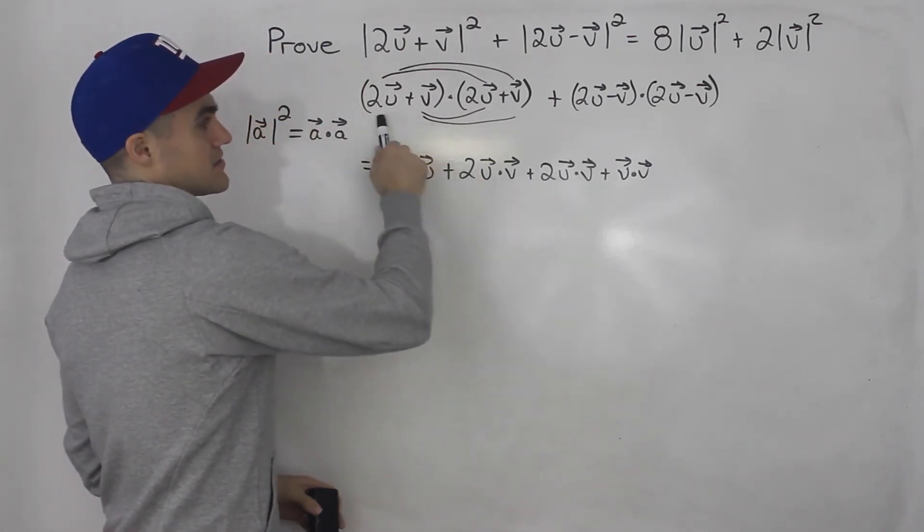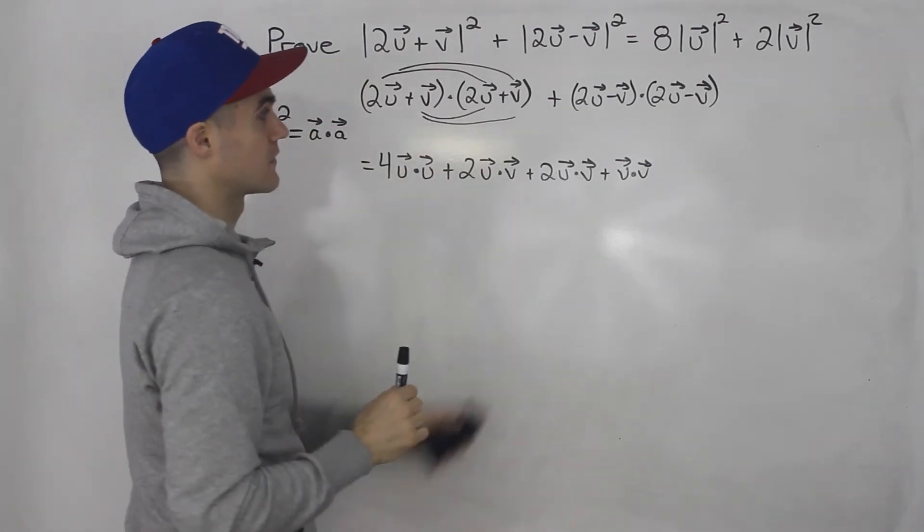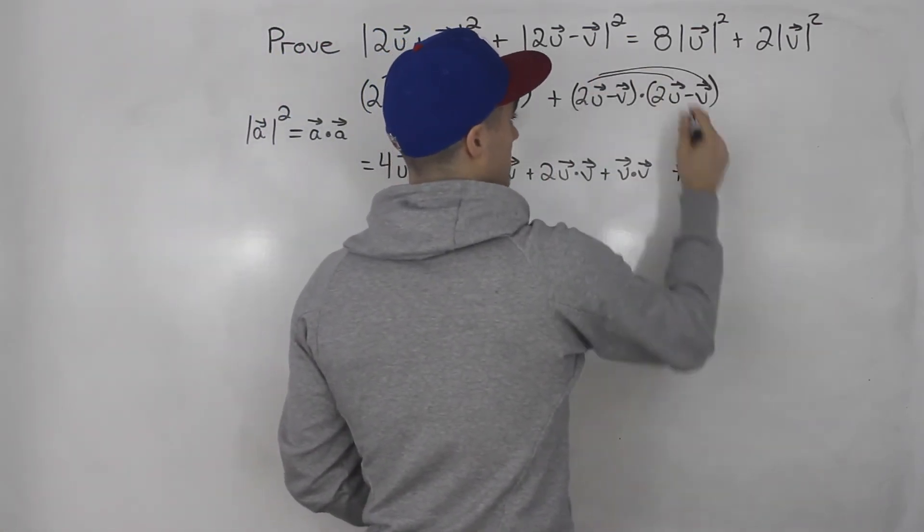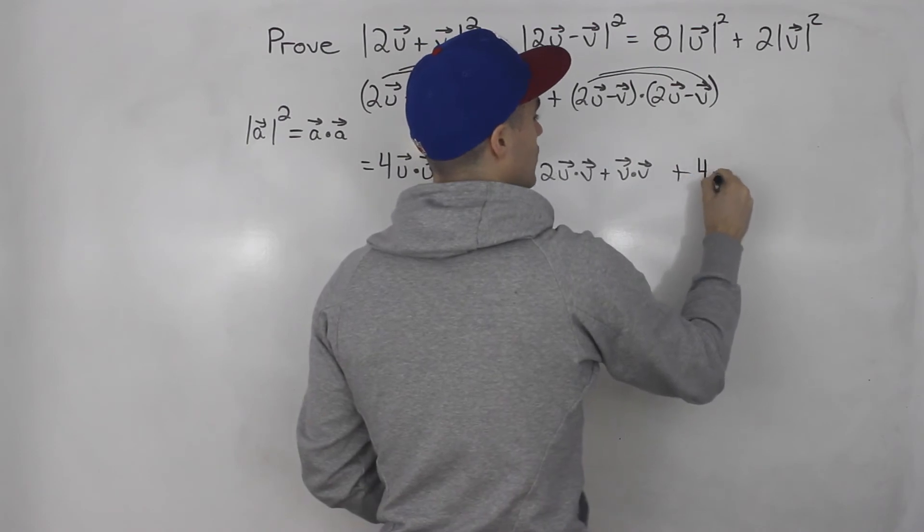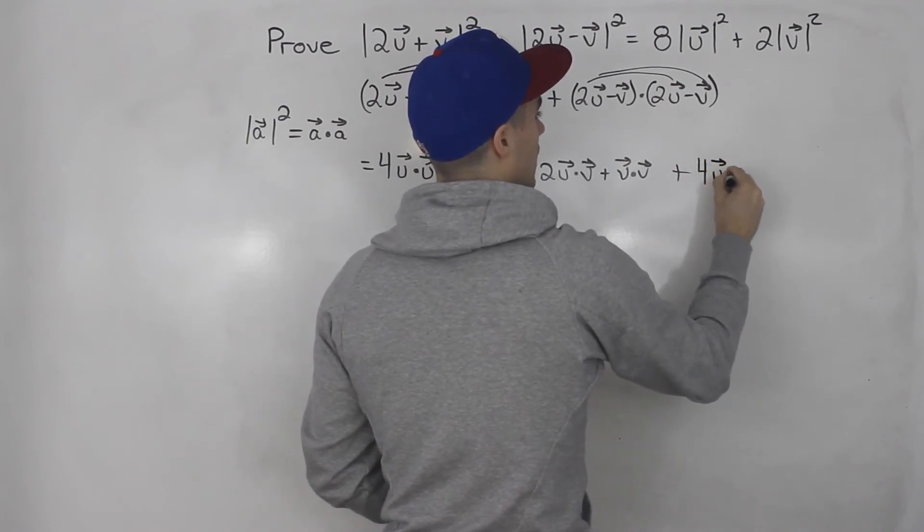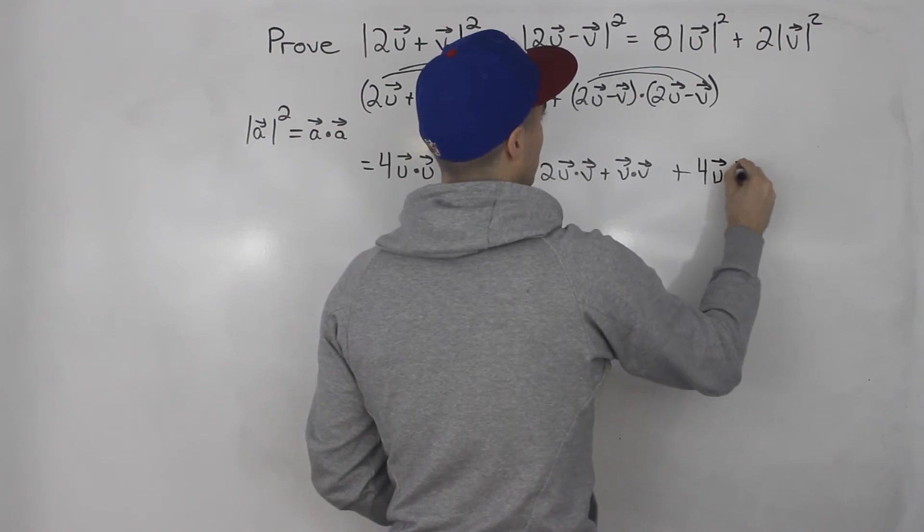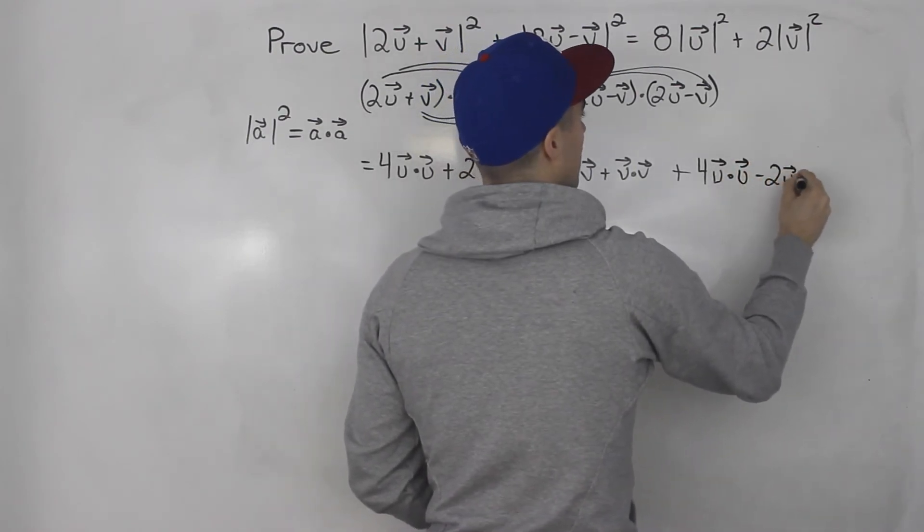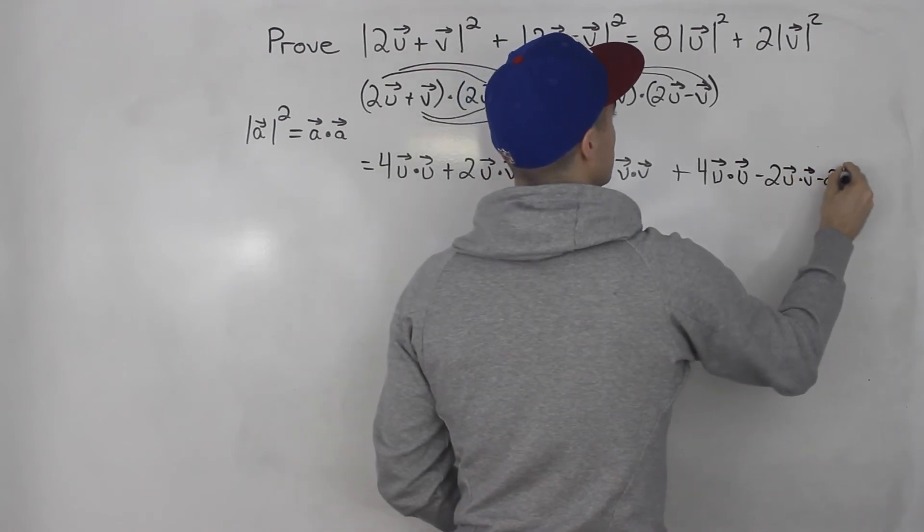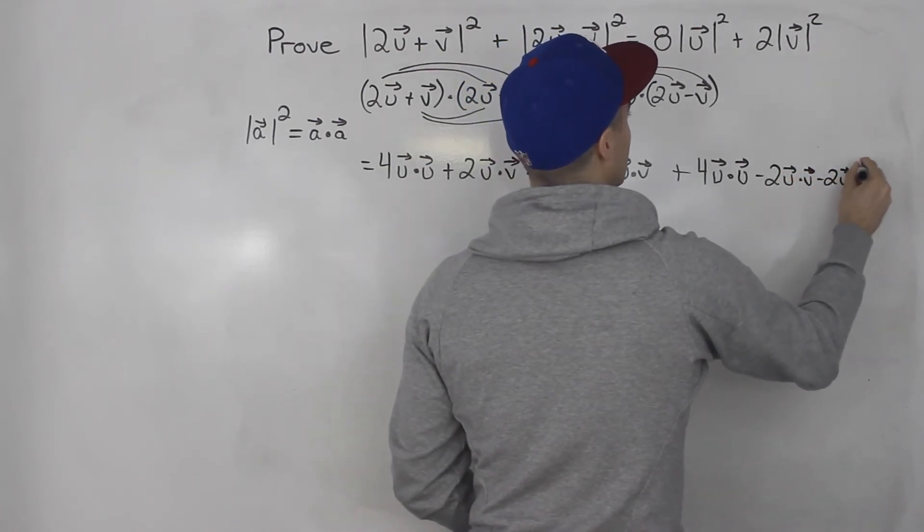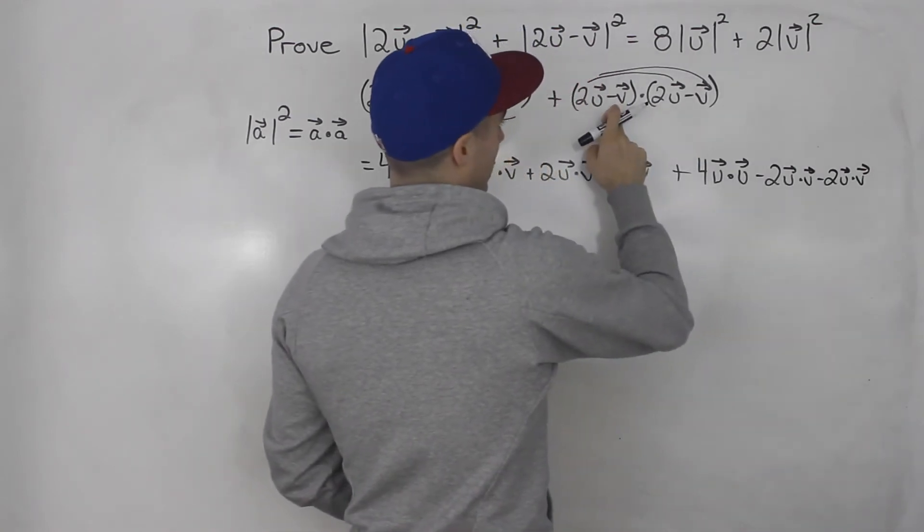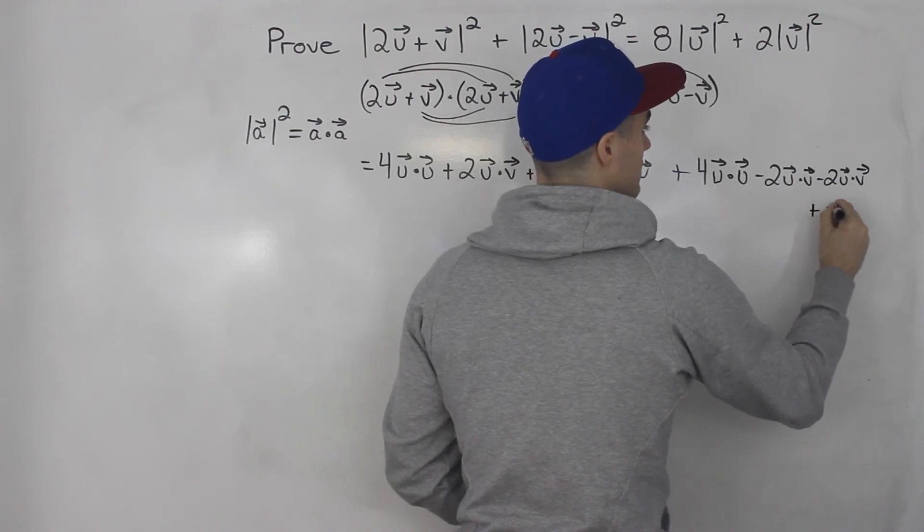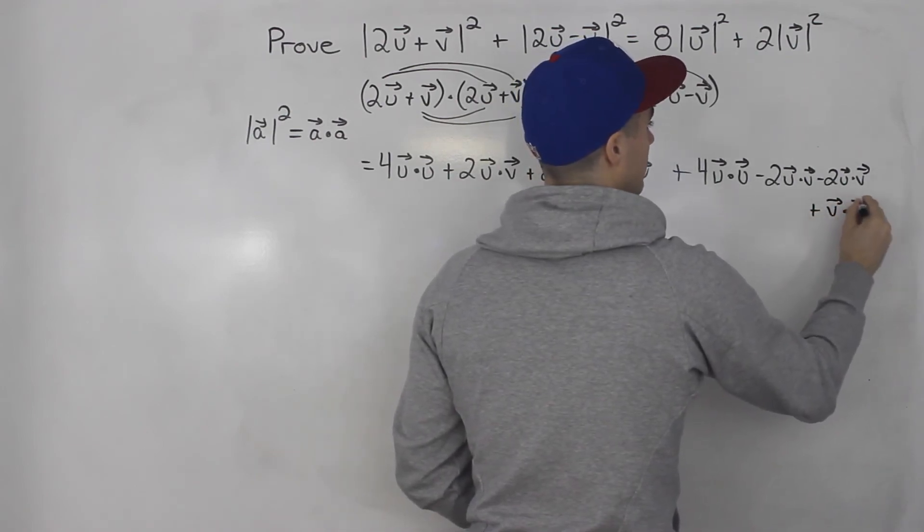So this here is just that expanded. And then same thing here. So this would be 2 times 2 is 4. So we'd have 4u dot vector u. And then minus 2u dot vector v minus 2u dot vector v. And then minus vector v times minus vector v. That is just plus v dot vector v.